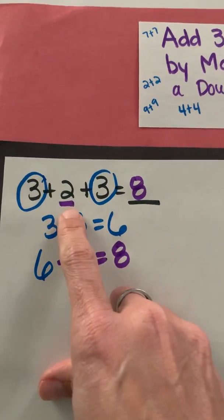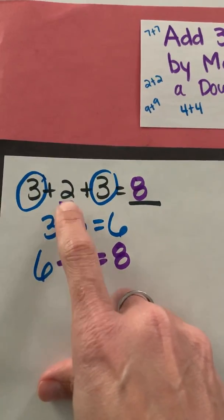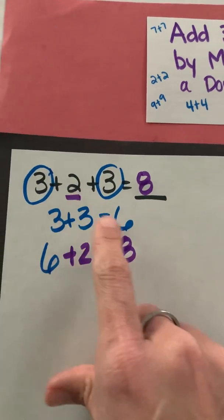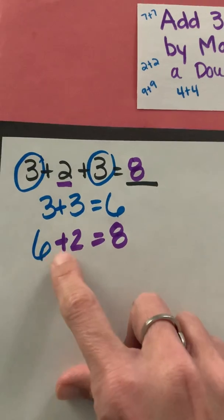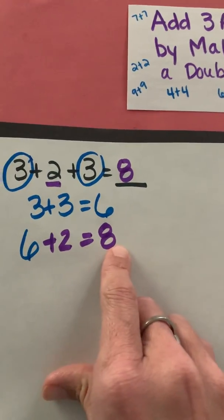But I'm not done because I have not added in my last addend of 2. So now I take the sum of 3 plus 3, which is 6, and I add on my 2, which gives me 8, a sum of 8.